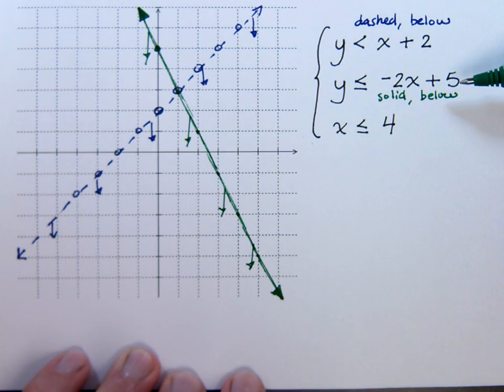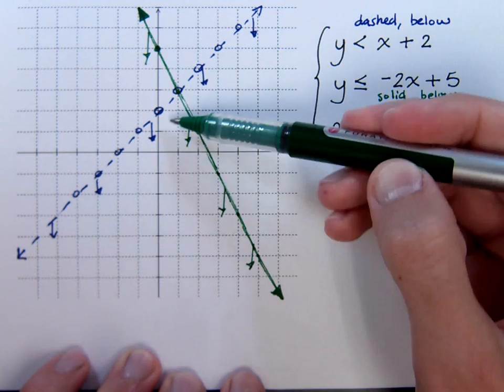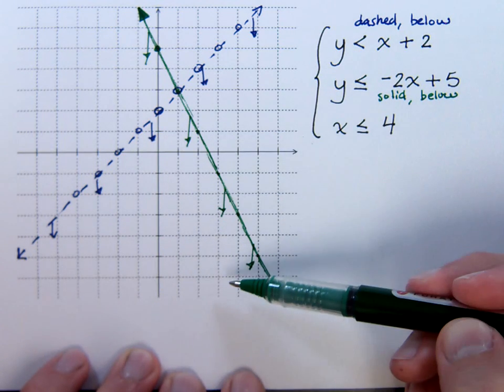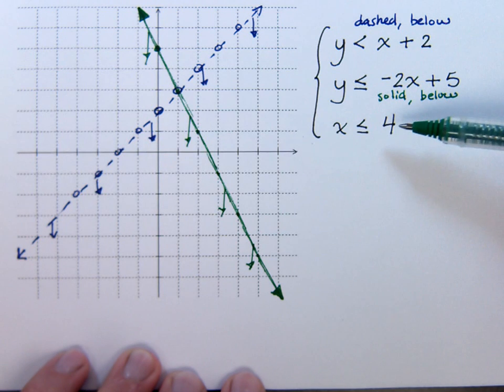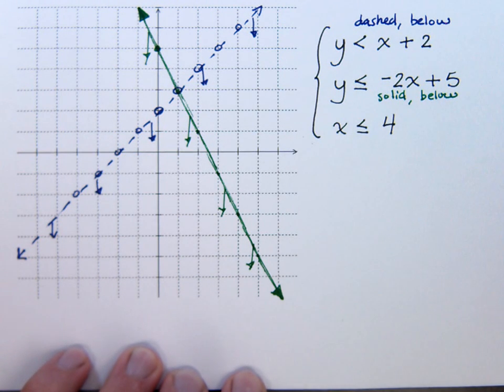Now if all we had were these two right here, their intersection would be this section right here in the bottom. But there's another item that we have here. This is x is less than or equal to positive 4.